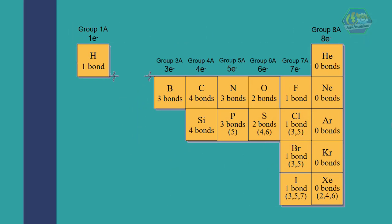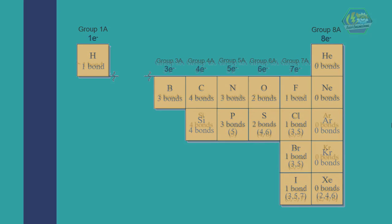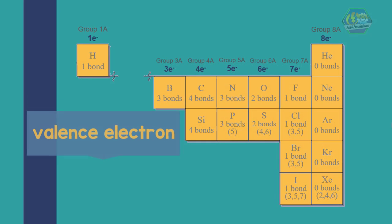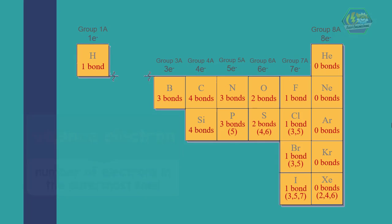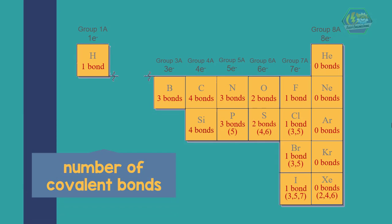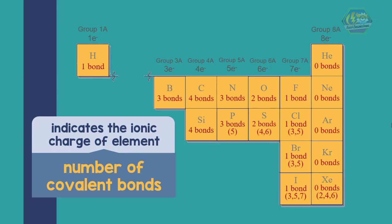In the figure are the common elements that can bind covalently with each other. For each element we can see the number of valence electrons — valence electron is the number of electrons in the outermost shell. We can also see the number of covalent bonds it can have with other elements.